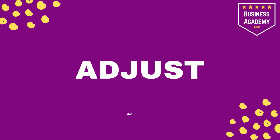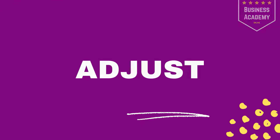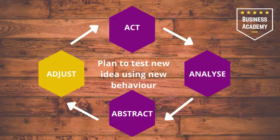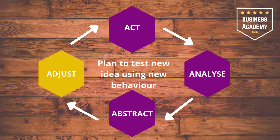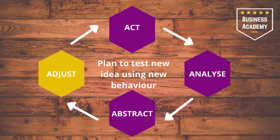The final stage is Adjust. In the Adjust stage, you plan to test the new idea using new behavior. You adjust what you're going to do, get your plan in action, ready to start the entire cycle again and Act — have the experience. This is where we adjust our strategies, ready for the next time we are going to Act, and then you begin again. Kolb's cycle is a continuous improvement knowledge management cycle.